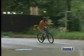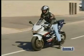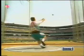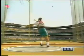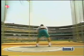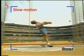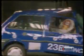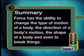Finally, let's look at a few more examples of force in action to find out the effect of force when it acts on a body. Force can accelerate things — the greater the force the cyclist exerts on the bike pedals, the greater his acceleration. Force also slows things down; when the cyclist applies the brakes, he uses the frictional force between the tyres and the ground to stop his bike. It takes force to change the direction of motion. Force can also change the shape of things — forces can squash, stretch, bend, and even break objects. In summary, force has the ability to change the type of motion of a body, the direction of a body's motion, the shape of a body, and even to break things.